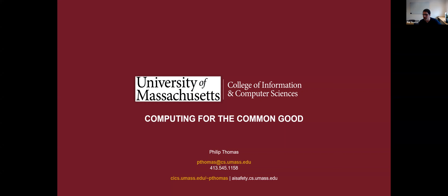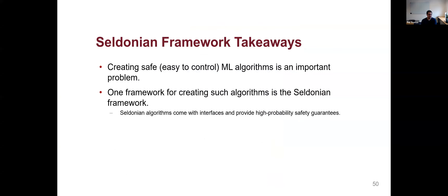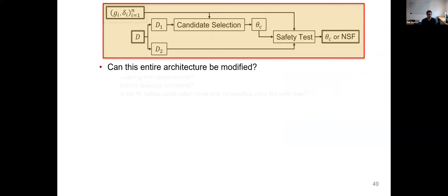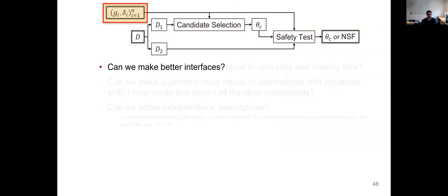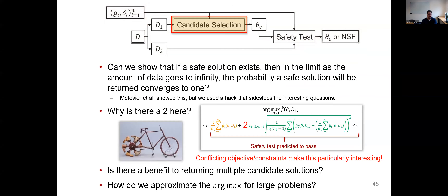One question I missed: can you provide more details on the candidate selection stage — how do you change the selection of theta_C when your outcome doesn't meet your constraints? The equation we use in most examples is the one with the factor of two. The standard ML algorithm is just the argmax over solutions minimizing classification loss. We add a subject-to constraint that the safety test will pass, which is exactly the safety test expression minus the factor of two. The green term is the sample mean of g-hat, unbiased estimates of G, and then the t-test tells us what amount to add for the confidence interval.